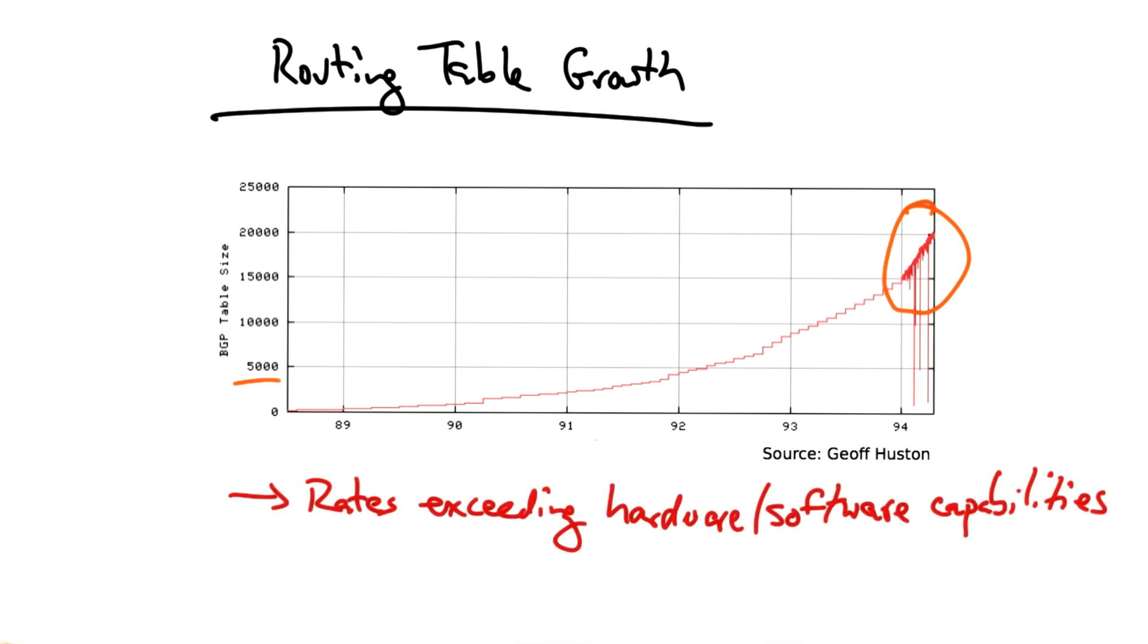In particular, the growth rates were exceeding the advances in hardware and software capabilities. We began to run out of the class C address allocation. There were far more networks that needed just a handful of IP addresses, such as a class C address space could provide. And yet, because only a certain range of the IP address space could be used for class C addresses, we began to run out fairly quickly. So there began to be a need for more flexible allocation.